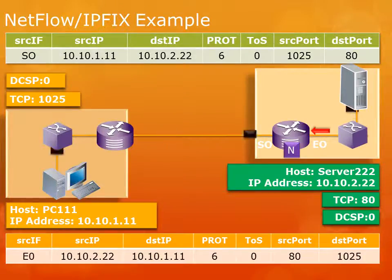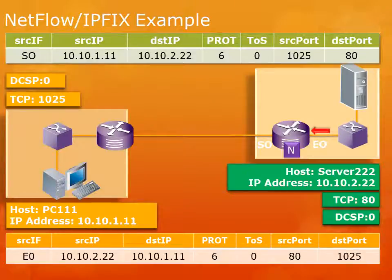Then our server starts sending back data to the user. As soon as that data crosses the NetFlow-enabled router into the Ethernet 0 interface, we get another entry in our NetFlow cache for Ethernet 0 — with the source IP, destination IP, protocol, source port, and destination port. Obviously the source and destination are switched because the direction has changed. We now have these two entries in our route cache, and all we need to do is tell the router to export those entries to the harvester so we can start tracking this in Reporter Analyzer.